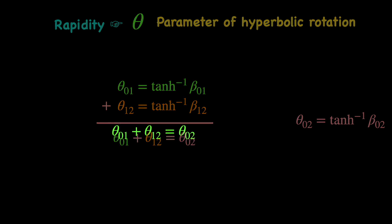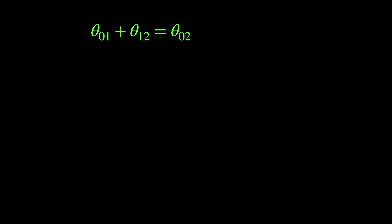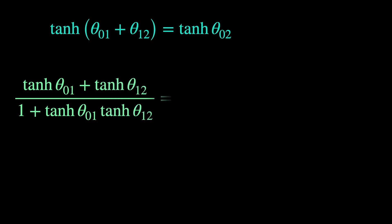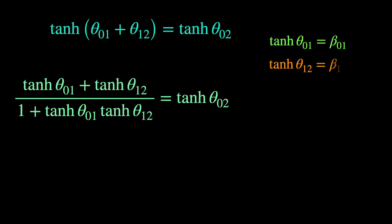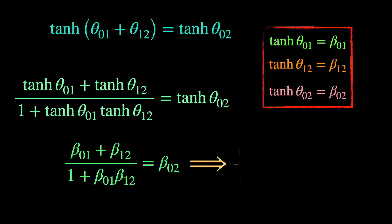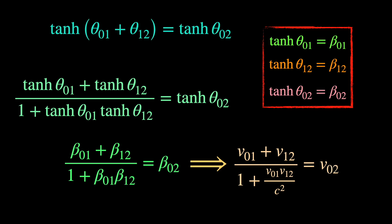This simple addition of the rapidity parameters is nothing but the relativistic velocity addition formula. To see this, just take the tanh of both sides, use the relevant identity for tanh of a composite angle θ₀₁ plus θ₁₂, and bring in the corresponding relative velocities in place of these hyperbolic functions. Simplify and see the velocity addition equation emerge.